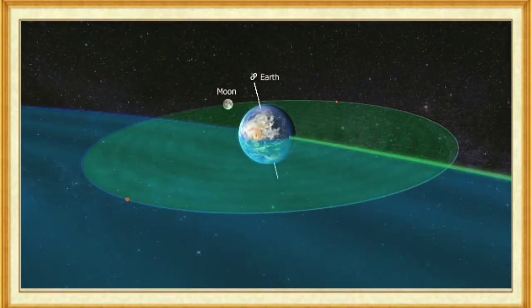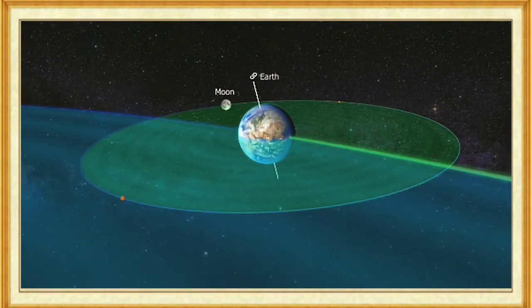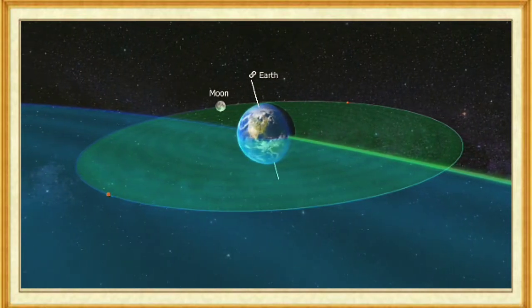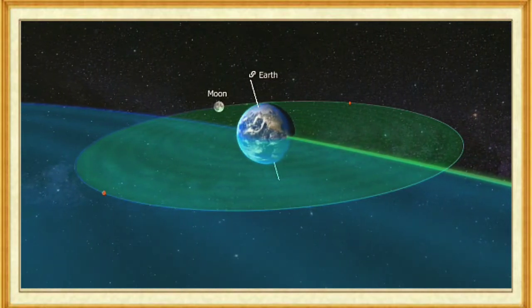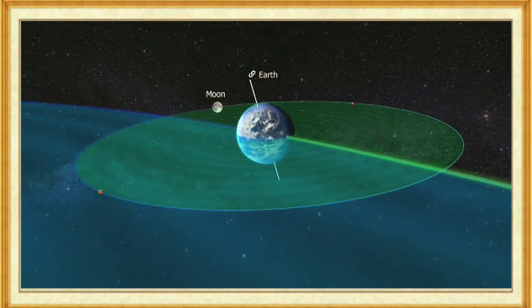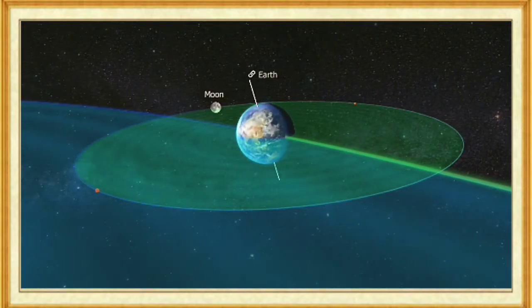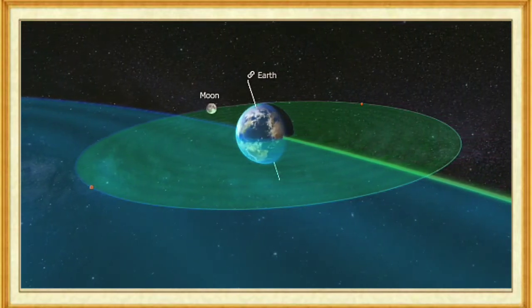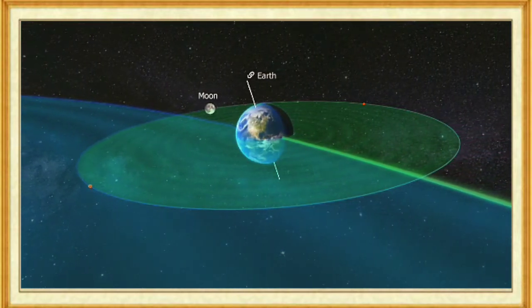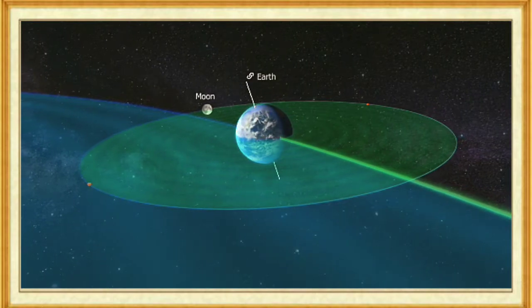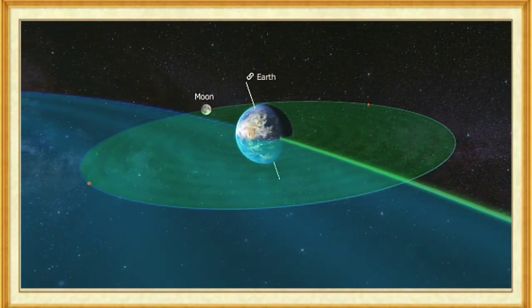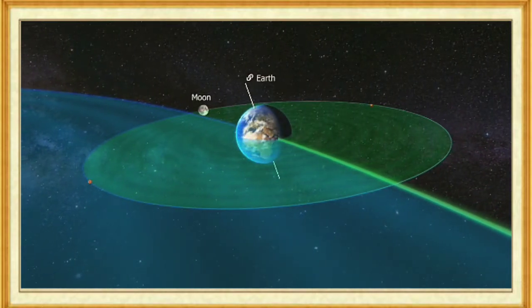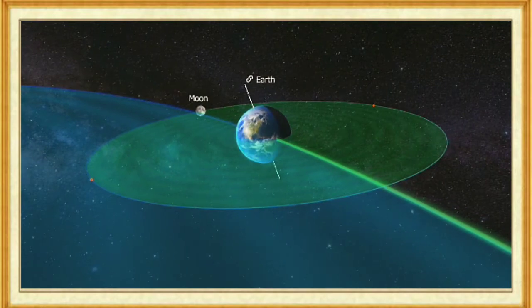The major effect of tides on the Earth is the slowing of our planet's rotation, and therefore a gradual increase in the length of the days. 400 million years ago, one year lasted about 400 days, and the length of one day was only 21.8 hours.